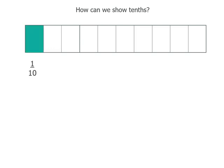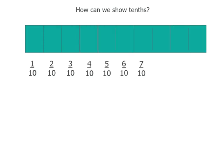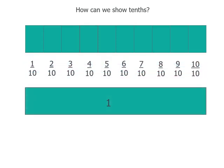So that would be 1 tenth, 2 tenths, 3 tenths — and we can jump up to 7 tenths. Then if you colour the whole lot in, you've got 10 tenths, which is the whole, or 1. See how they're worth exactly the same amount? They take up the same amount of space — 1 is shown in tenths and the other as a whole number.